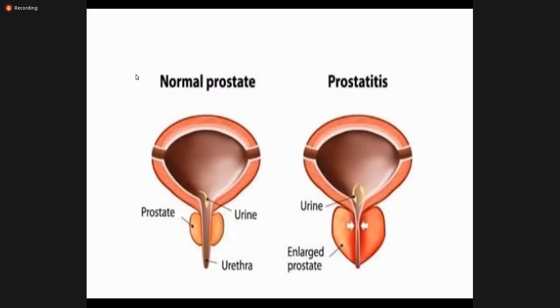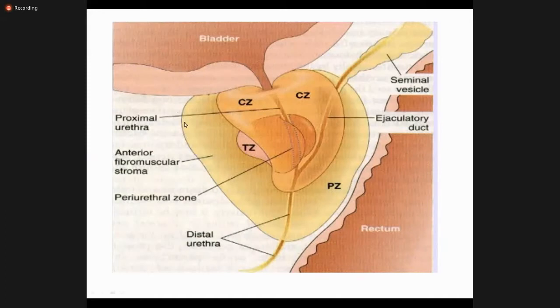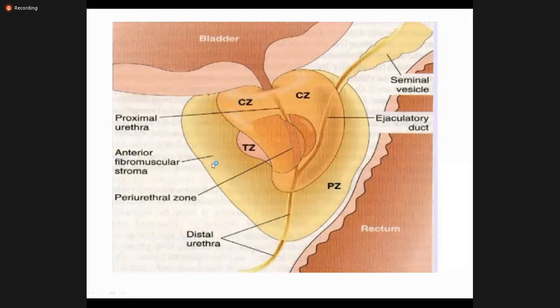The zones are the transitional zones, peripheral zones, periurethral zones, and the central zones. In this picture we can see the bladder, the urethra, the ejaculatory duct attached to the urethra, the distal urethral opening, the peripheral zone, the periurethral zone, the central zone, and the anterior fibromuscular stroma. You should have a basic concept of the anatomy of the prostate before going into detail.